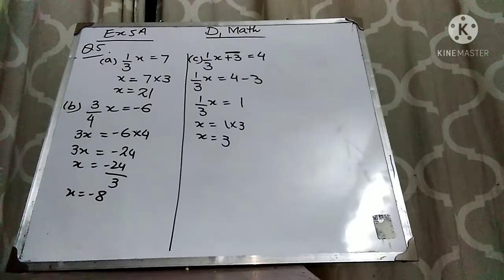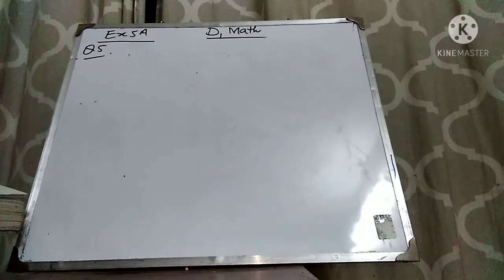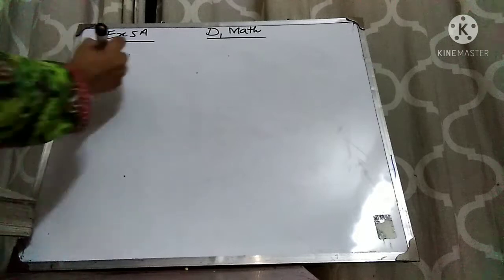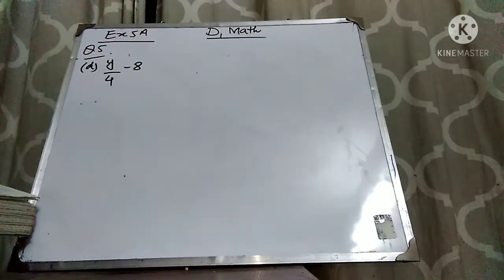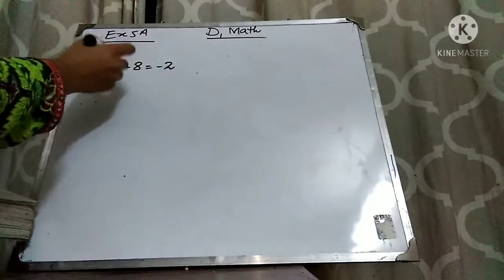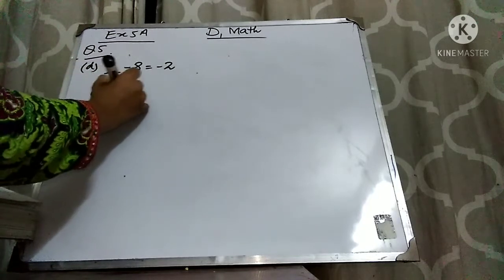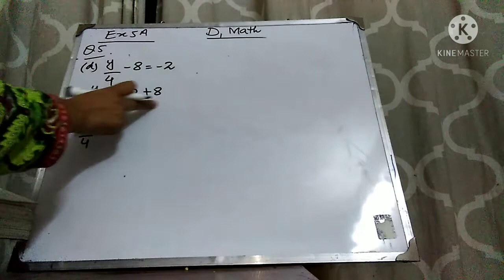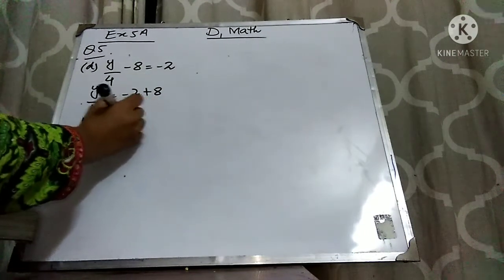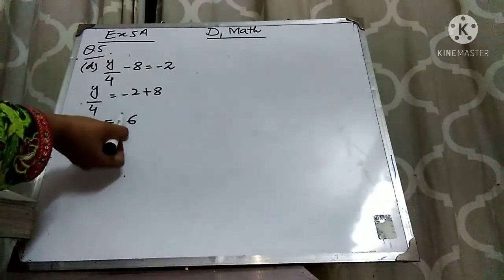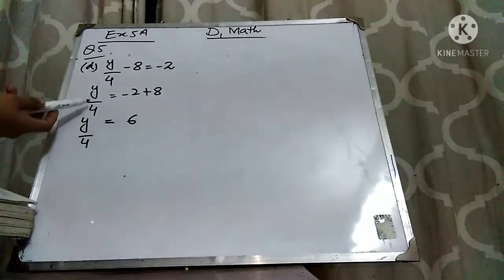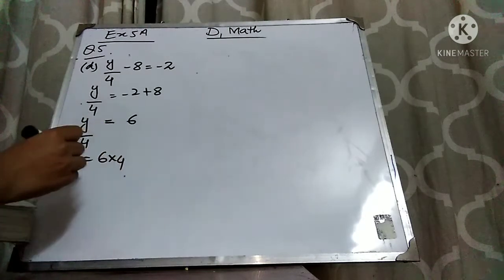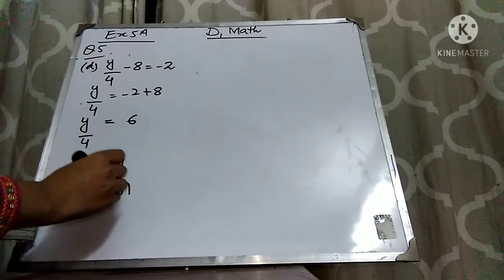Now Part D is y/4 - 8 = -2. This 8 is subtracting over here; if it goes to that side it will add. Plus minus is minus, so you will do subtraction. When you subtract 2 from 8 you get 6. You have to write the sign of the bigger number — here the sign is plus. So you have 6. Now 4 is dividing with the variable; when anything is dividing and goes to the other side it will multiply. So your answer is 6 times 4 = 24.